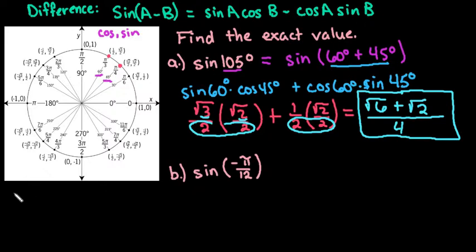So what I'm going to do is I'm going to rewrite negative pi over 12 as 2 pi over 12 minus 3 pi over 12, because 2 minus 3 gives me negative 1. And I'm going to write these in their reduced form. 2 pi over 12 reduces to pi over 6. 3 pi over 12 reduces to pi over 4.